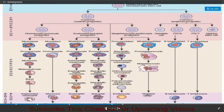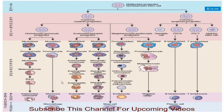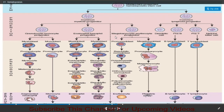Monoblast leads to promonocyte and finally to monocytes, which then lead to macrophages. The eosinophil-basophil progenitor gives rise through myeloblast, chromomyelocyte, eosinophilic myelocyte, eosinophilic metamyelocyte, and eosinophilic band cells to eosinophils; and through basophilic myelocyte, basophilic metamyelocyte, and basophilic band cells to basophils. The megakaryocyte-erythrocyte progenitor leads to erythrocytes and platelets.